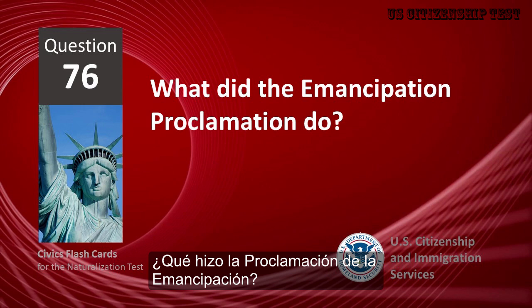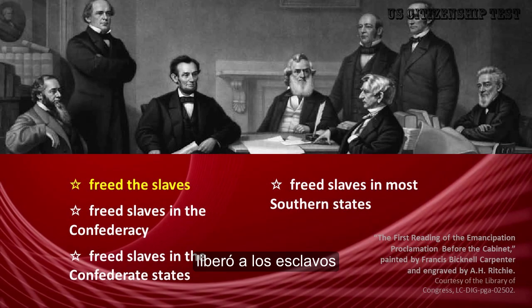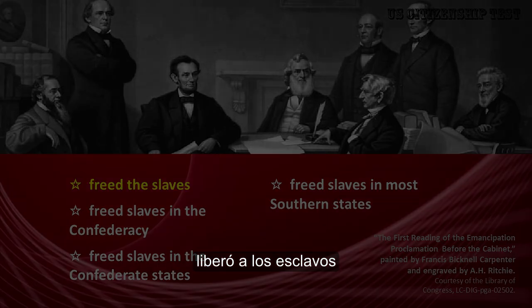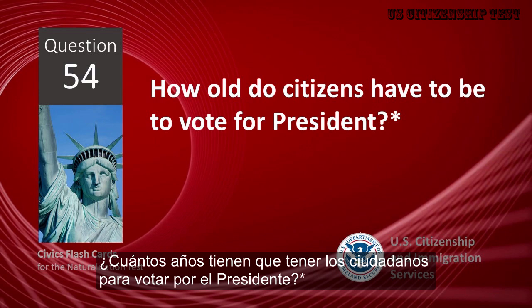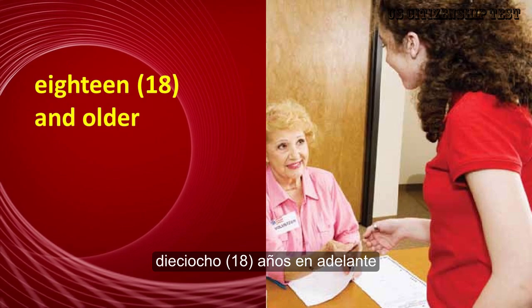What did the Emancipation Proclamation do? Free the slaves. How old do citizens have to be to vote for President? 18 and older.